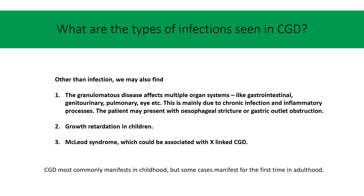Other than infection, we may also find granulomatous disease, which may manifest as obstructive symptoms in the urinary or gastrointestinal system — for example, esophageal stricture or gastric outlet obstruction. It may also cause growth retardation in children. Although CGD manifestation is common in children, in some cases manifestation could be delayed until adulthood.